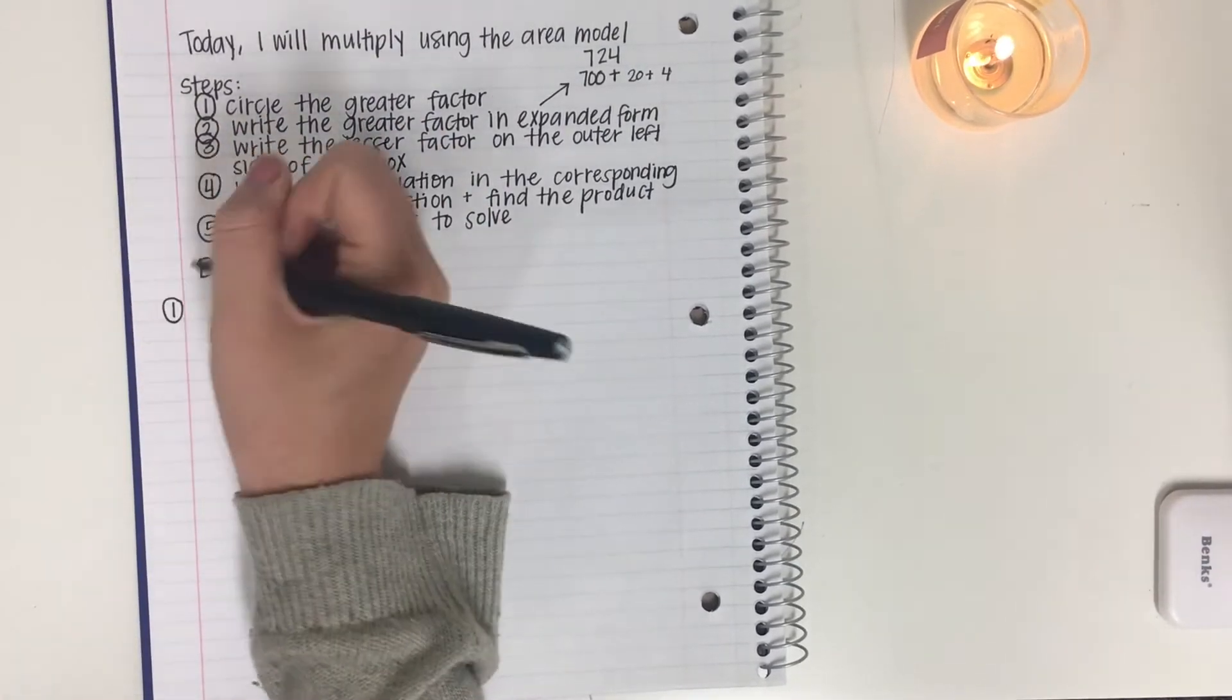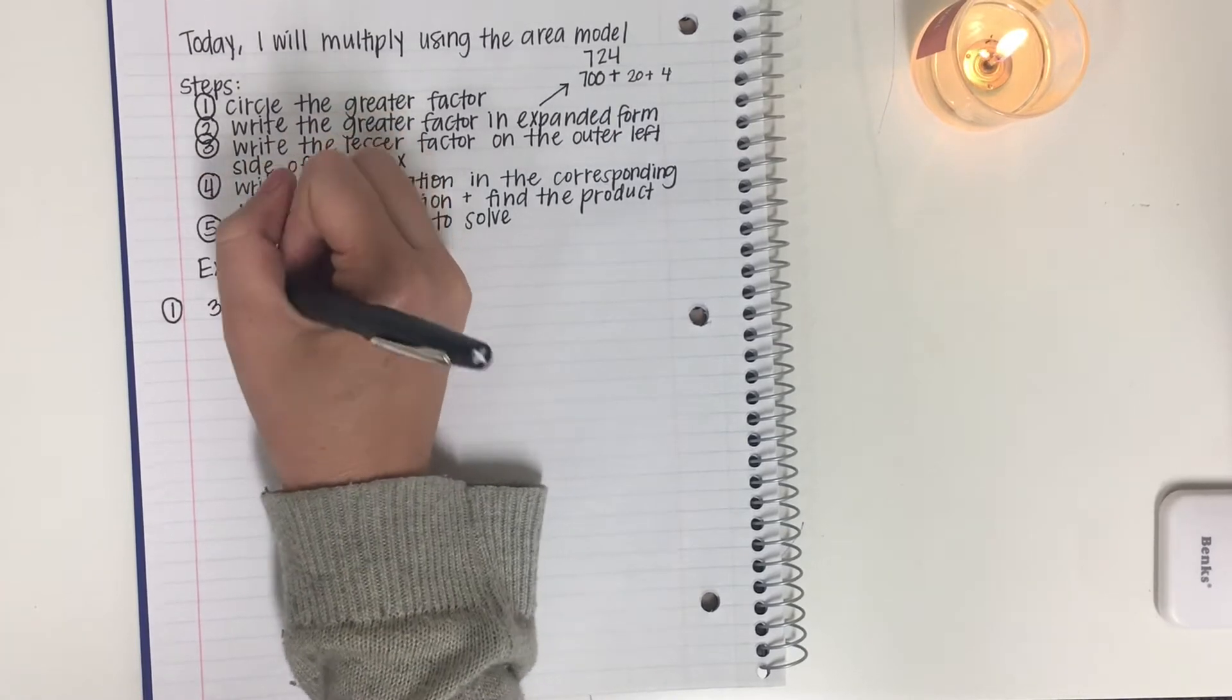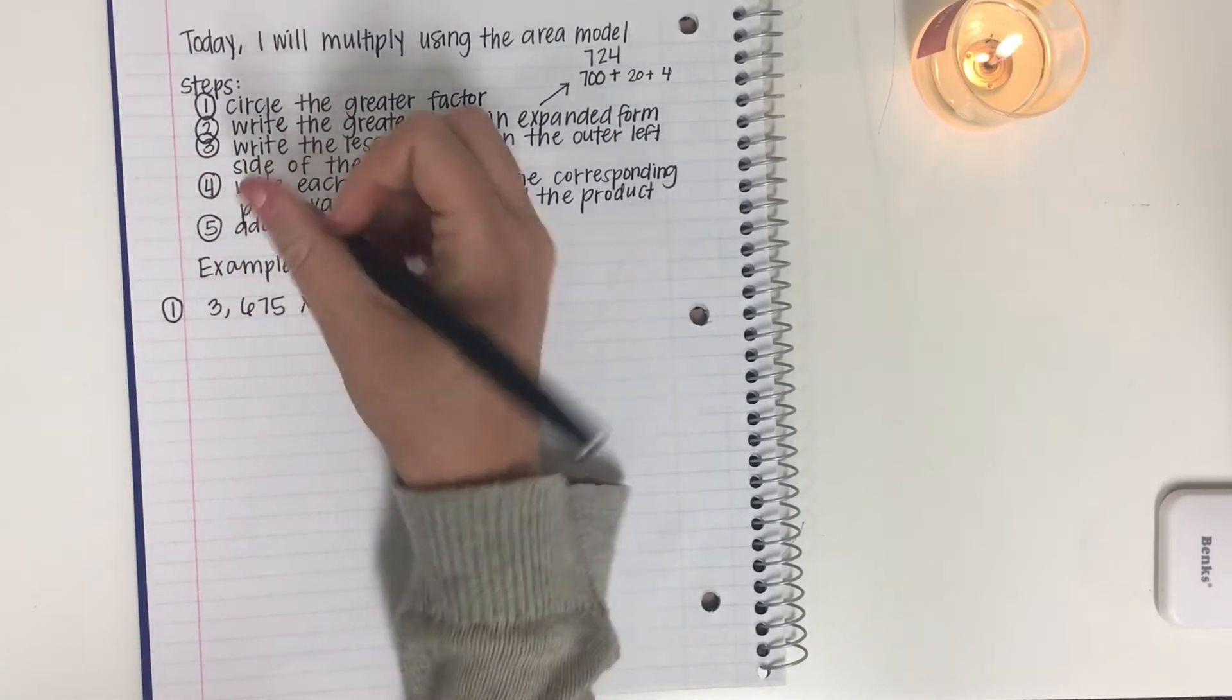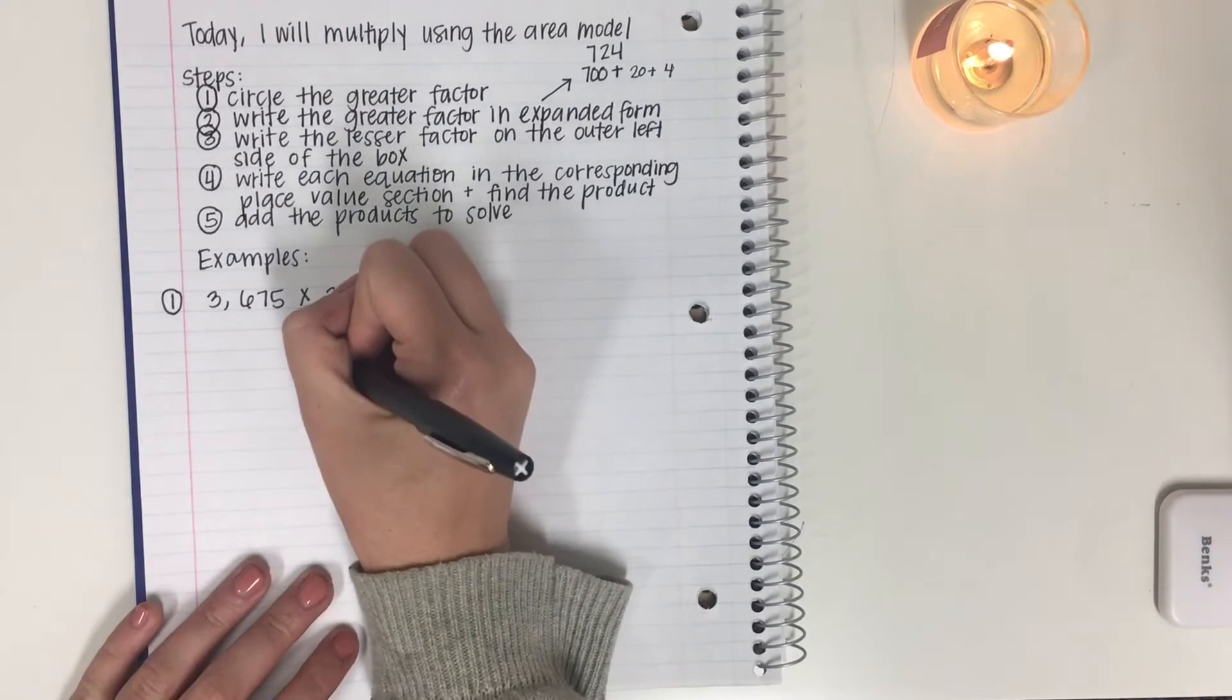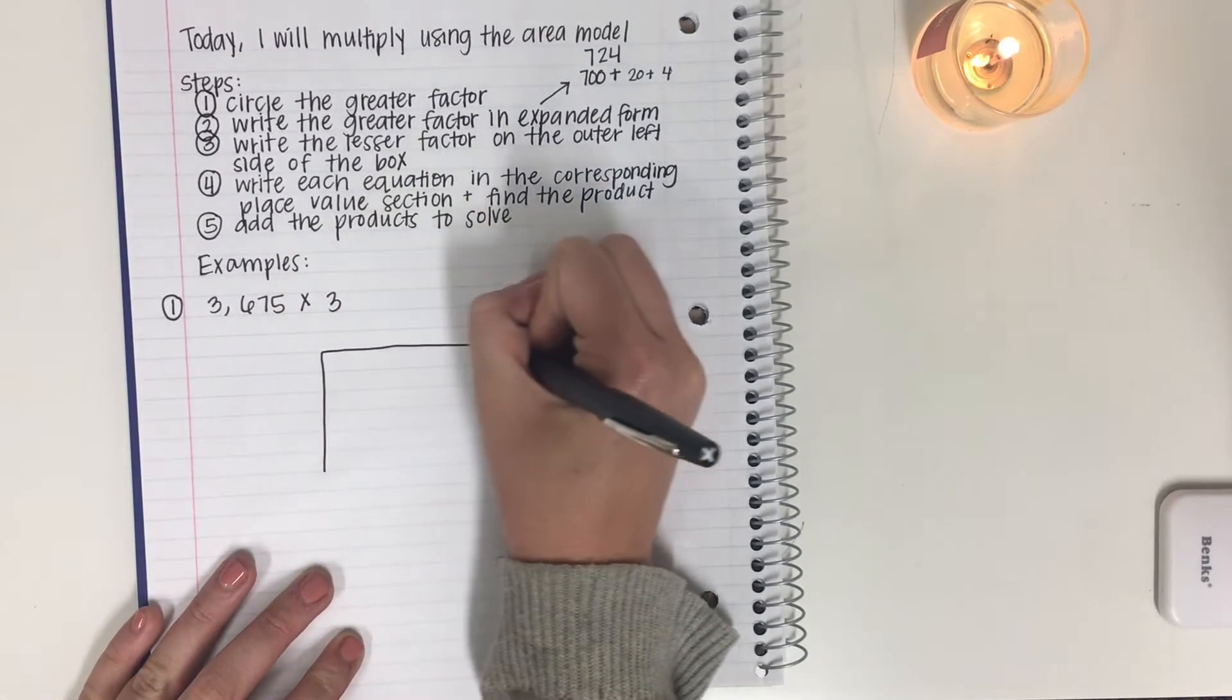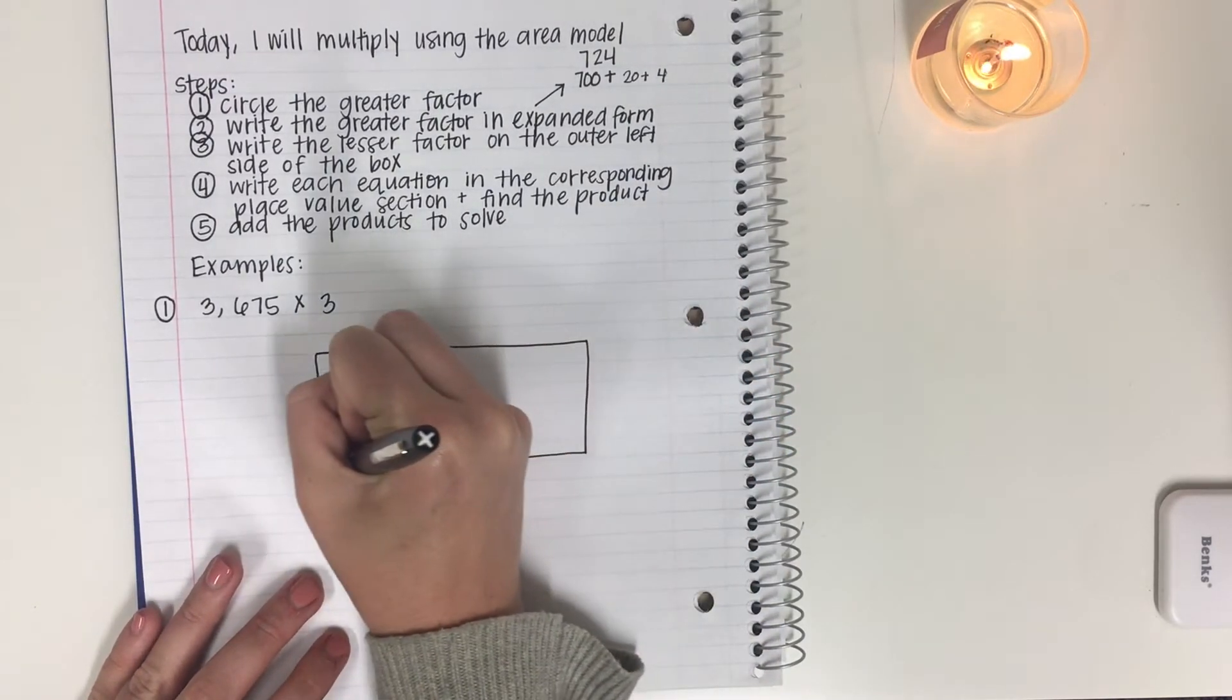Number one, 3,675 multiplied by 3. Okay, let's first draw our box. Sometimes you might have the box, sometimes you have to draw it yourself. So let's draw it ourselves before we start.